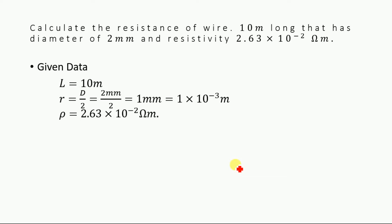Now the length is given as 10 meters. The diameter is given, so we will convert the diameter to radius because for calculating the resistance of a wire we will need the radius of that wire. The resistivity is given as 2.63 multiplied by 10 to the power minus 2 ohm, and we will determine the resistance of this wire.